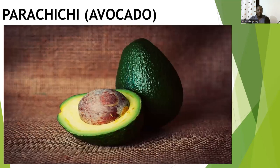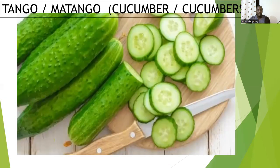Parachichi means avocado. In plural we put ma- in front of it and it becomes maparachichi. Then tango means cucumber. In plural is matango, cucumbers.